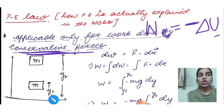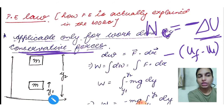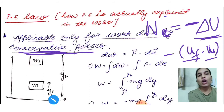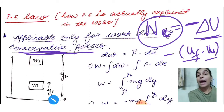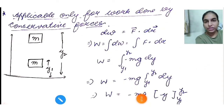We represent potential energy as U. So: WC = −ΔU = −(U_final − U_initial). This means work done by conservative forces equals U_initial minus U_final. Comparing with the work-energy theorem: in that theorem any force could be used and ΔK = W. Here, only conservative forces apply, and WC = −ΔU. Let's now see the derivation.